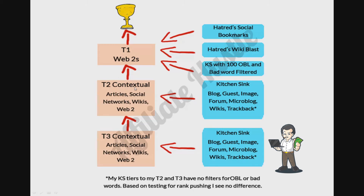Tier two is our contextual layer — we have articles, social networks, wikis, and web 2.0s. Tier three is the same but with different settings, which I'll show in the next part of this tutorial. On the right side we have links coming in from the projects. I also have my social bookmarks and wiki blast — I built those because I got sick of waiting on Panda updates.